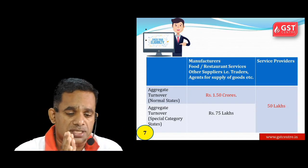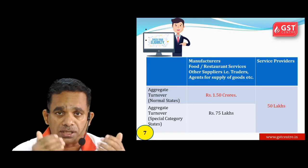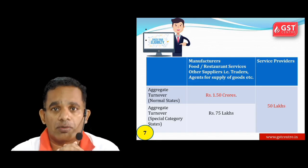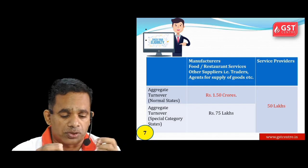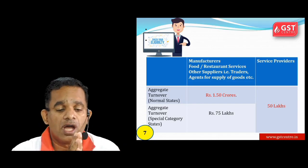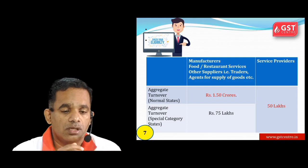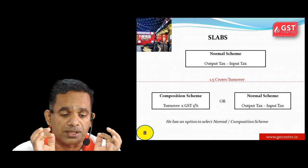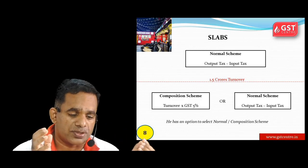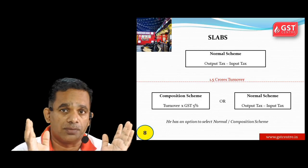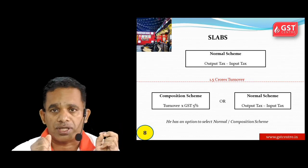Other service providers के लिए 3% + 3% = 6% होगा। Composition scheme छोटे business persons को applicable है, इसका limit होता है 1.50 crores के नीचे annual turnover। कुछ special category states जैसे Manipur, Meghalaya वगैरह के लिए 75 lakhs और service providers के लिए limit होती है 50 lakhs।